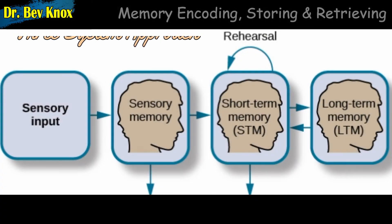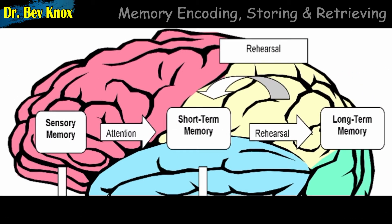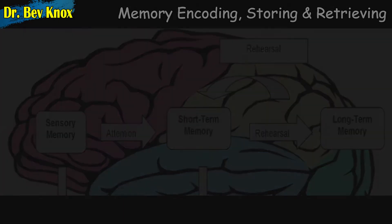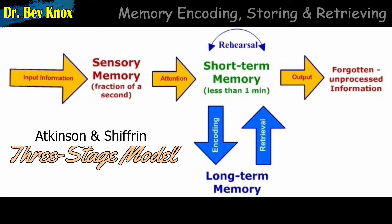According to the three-system approach to memory that dominated memory research for several decades, there are different memory storage systems or stages through which information must travel if it is to be remembered. Historically, this approach has been extremely influential in the development of our understanding of memory, and although new theories have challenged it, it still provides a useful framework for understanding how information is recalled. The three-system memory theory proposes the existence of three separate memory stores.